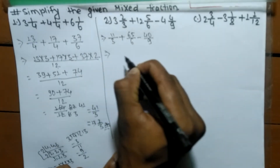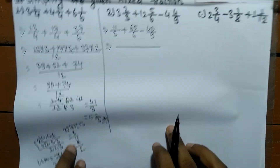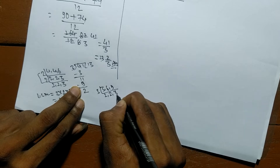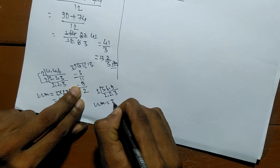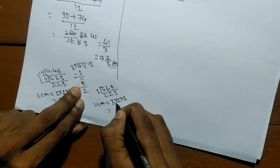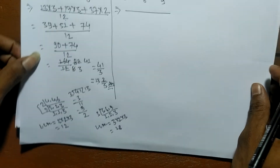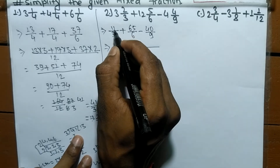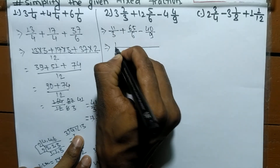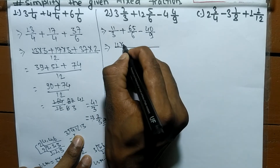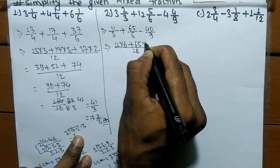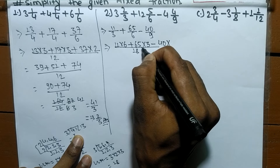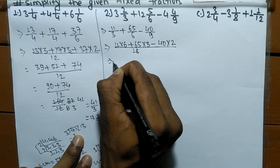Now we have to take the LCM of denominators 3, 6, and 9. The LCM of 3, 6, and 9 is 18. Now we multiply each numerator with the quotient of LCM divided by the respective denominator. So 11 into 18 divided by 3 means it is 6, plus 65 into 18 divided by 6 means it is 3, minus 40 into 18 divided by 9 means it is 2.